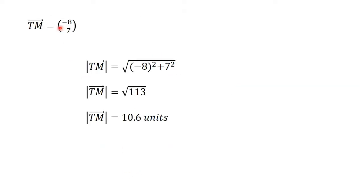The question also asks us to find the magnitude of vector TM. The magnitude of vector TM is equal to the square root of the x-component squared plus the y-component squared. The x-component is negative 8, so we have negative 8 squared plus 7 squared. Don't forget that if you are squaring a negative number, put it in brackets before you square it. This gives us the square root of 64 plus 49, which is the square root of 113, equal to 10.6 units.